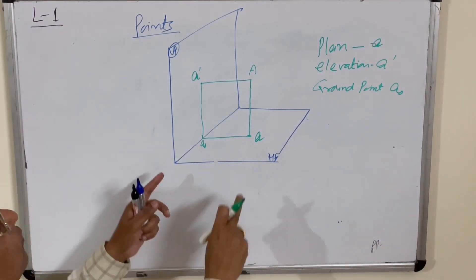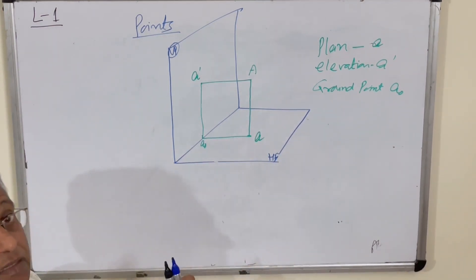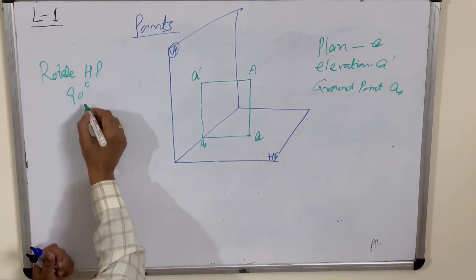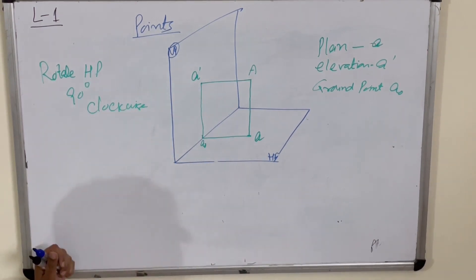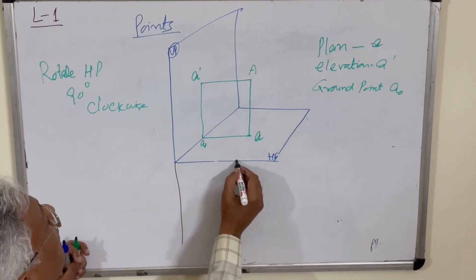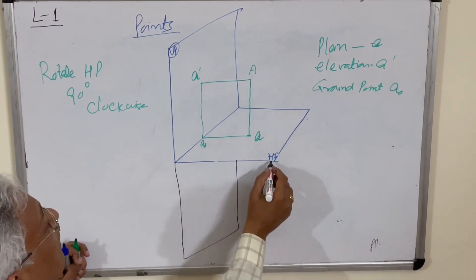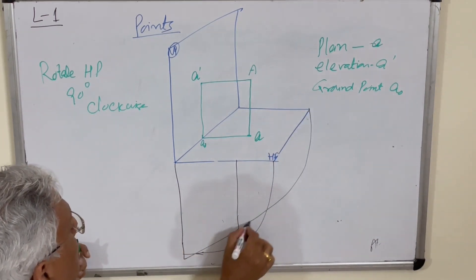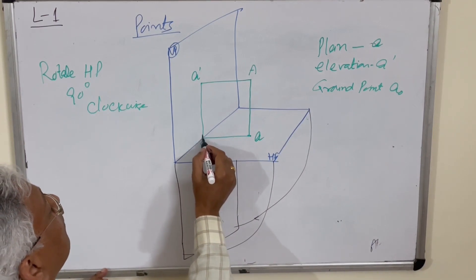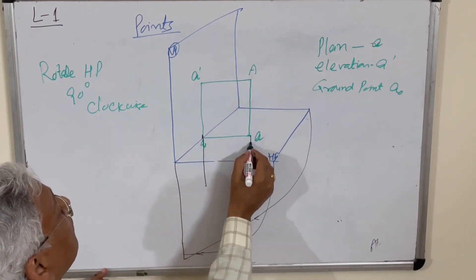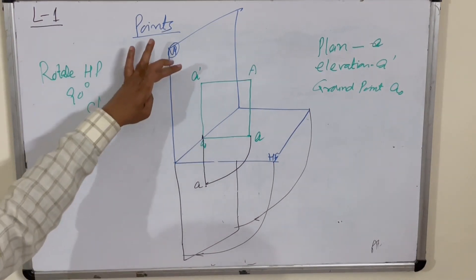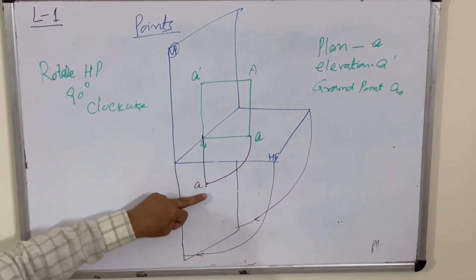Since we draw on a 2D drawing sheet, we convert this 3D figure into a 2D figure. We rotate the horizontal plane clockwise 90 degrees. Always rotate the horizontal plane clockwise by 90 degrees. When you rotate this plane, it comes down. This plane comes down and coincides with the vertical plane. Point A will be below — if you extend the line, you get point A. This distance is the same. So a′ is in the vertical plane, A0 is on the ground line, and a is now in the horizontal plane which is in line with the vertical plane.